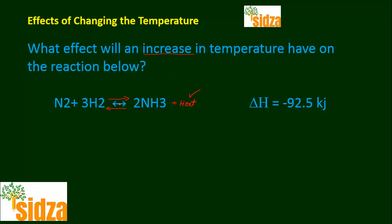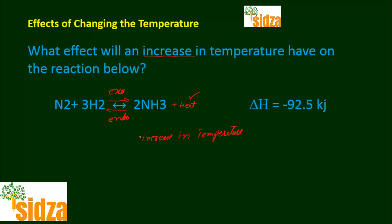You can also remember it this way: for this system, the forward reaction is exothermic and the backward reaction is endothermic. When you increase temperature, it is the endothermic step that will be favored — increasing temperature always favors the endothermic step, the step where heat is absorbed. And the exothermic step will be favored when you decrease temperature — decrease in temperature always favors the exothermic step.